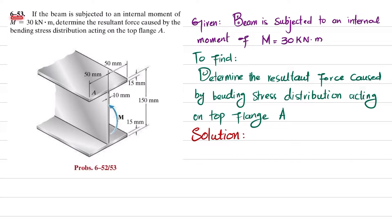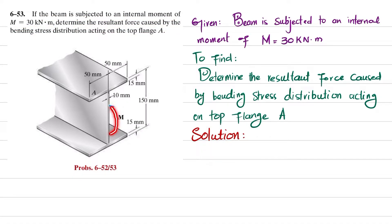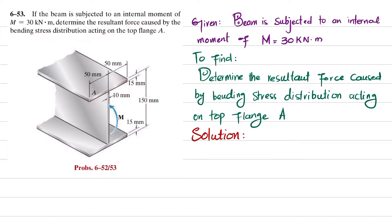Welcome back, problem 6-53. The statement is: if a beam is subjected to an internal moment of 30 kilonewton-meters, determine the resultant force caused by the bending stress distribution acting on the top flange. You can see the cross-section of the beam acted upon by an internal moment of 30 kilonewton. We have to find the resultant force acting on top flange A due to the bending stress distribution.